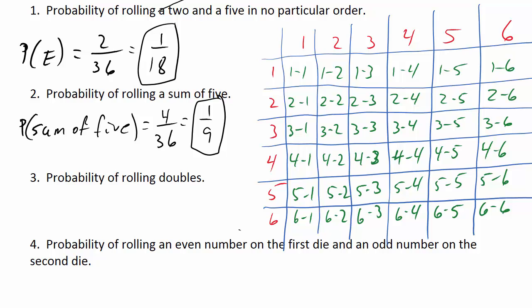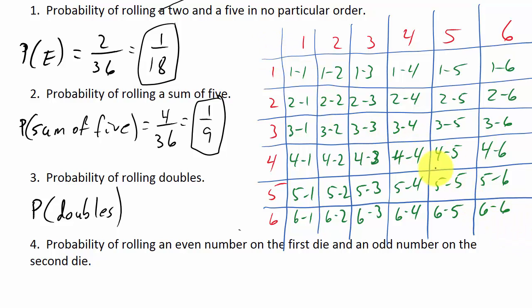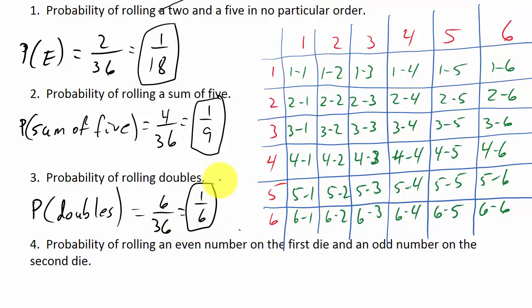What's the probability of rolling doubles? That means 1-1, 2-2, 3-3, 4-4, 5-5, or 6-6 — that's the diagonal of the table. There are 6 successful outcomes over 36 possible, giving us 1 sixth.